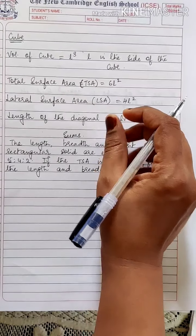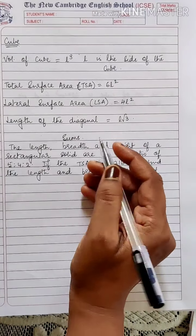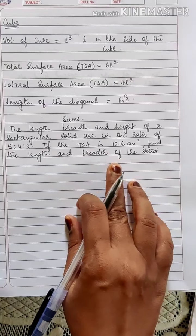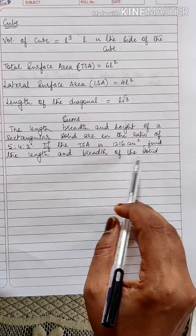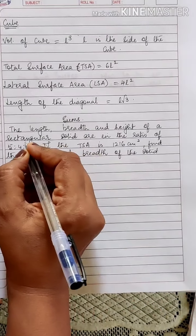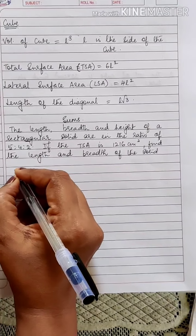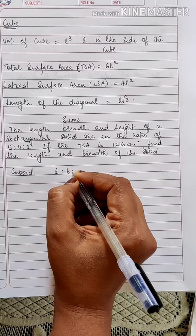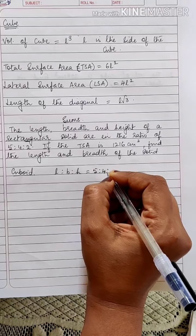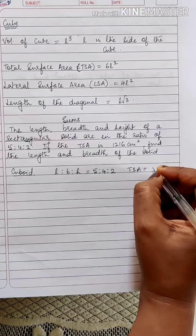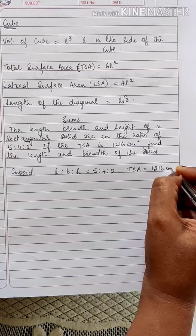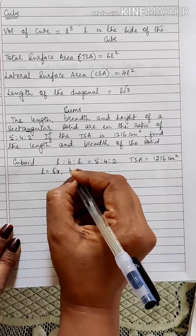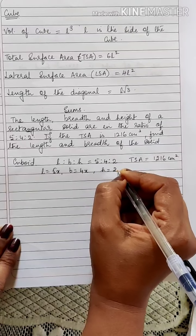Using these formulas we will solve a few sums. The length, breadth and height of a rectangular solid are in the ratio 5:4:2. If the TSA is 1216 cm², find the length and the breadth of the solid. Since this is a rectangular solid, it is a cuboid and the dimensions L:B:H = 5:4:2. Since this is in ratio, take L = 5x, B = 4x and H = 2x.